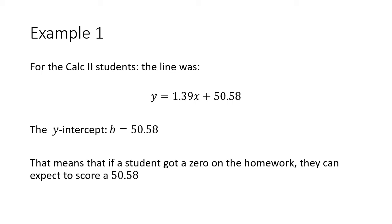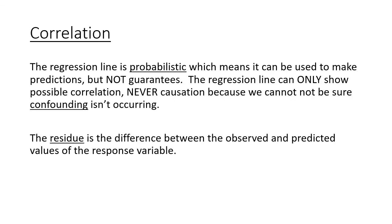The y-intercept was 50.58. That means if a student did zero homework, they could have expected to get a score of like 51 points. This regression line is probabilistic—that means we can make predictions but it never guarantees anything.